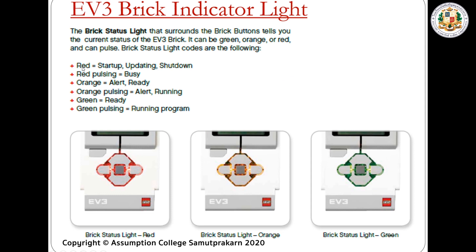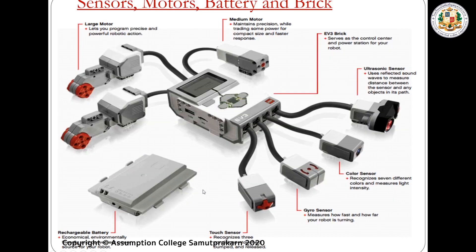EV3 brick indicator lights: red means starting up, updating, or shutting down. Red pulsing means it's busy. Orange means alert or ready. Orange pulsing means alert or running. Green means ready. Green pulsing means the program is running.